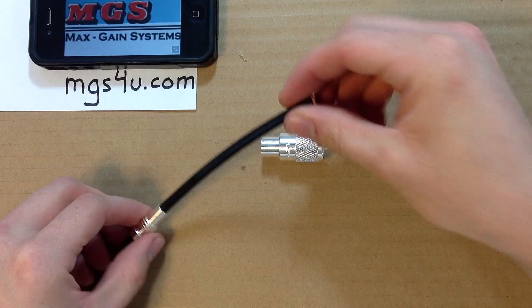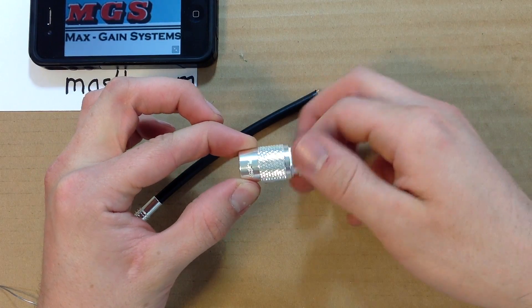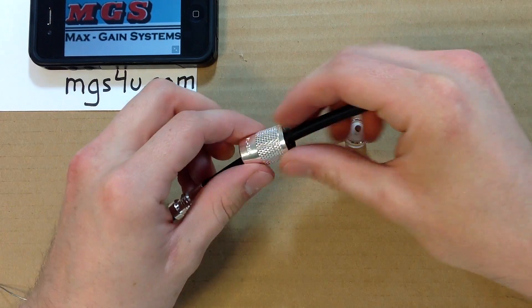We start out by placing the UG176 reducer onto the cable. When we separate out the outer shell of the PL259, we simply unscrew it. Place the outer shell onto the coax.